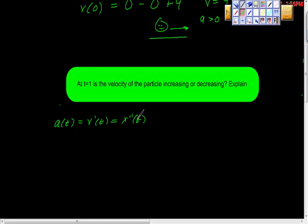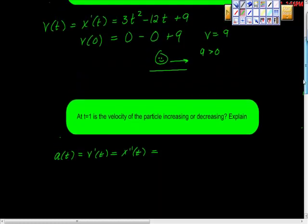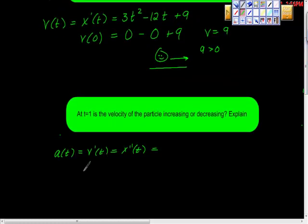So I'm telling you this because this could be given to you in any way. So let's start off with the derivative we already took, which was 3t squared minus 12t plus 9. And that's the velocity function.